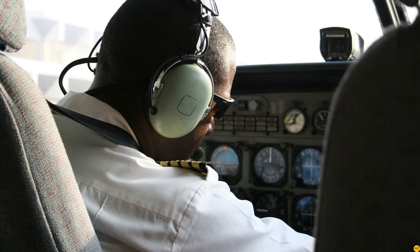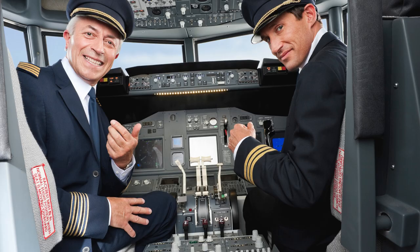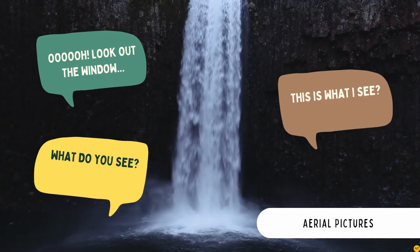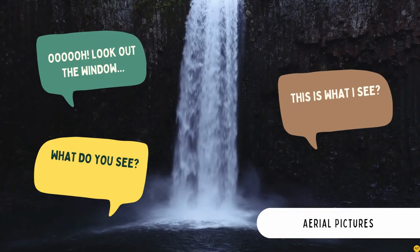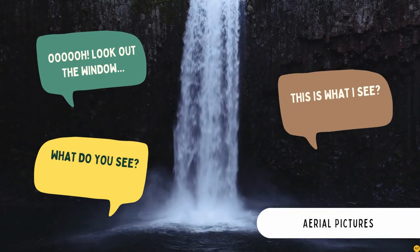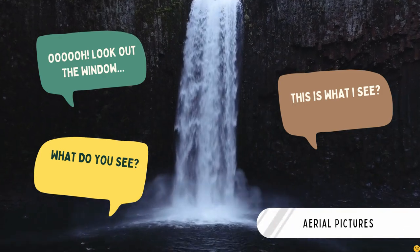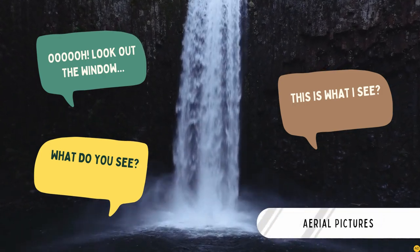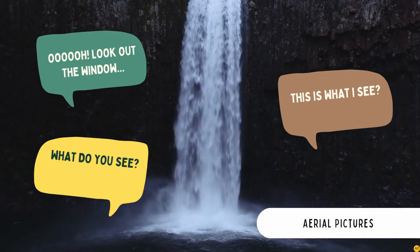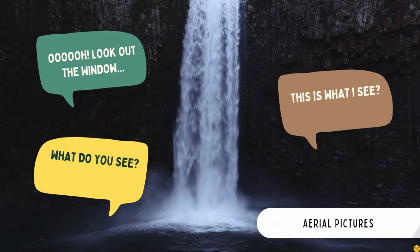A pilot is a woman or man that can fly an airplane. Flight 527 ready for departure — at this time I'm going to ask that you fasten your seat belts. Oh, look out the window — what do you see? Let me use my camera to take an aerial picture for you. An aerial picture is a picture that is taken from an airplane or high up looking down at the earth.